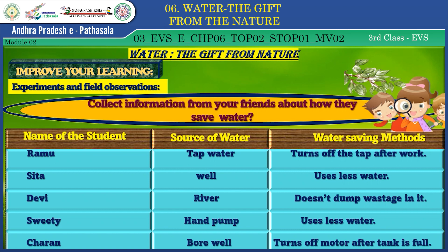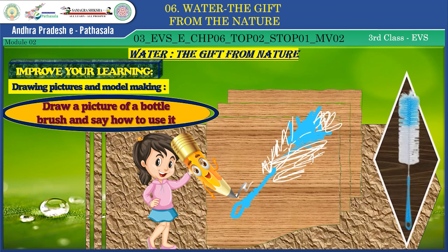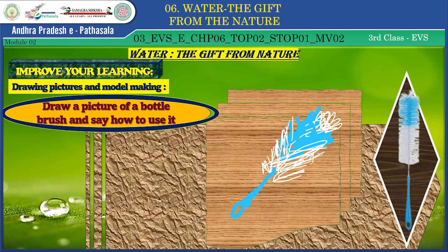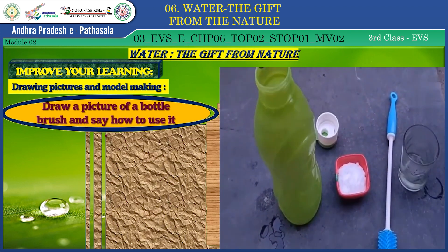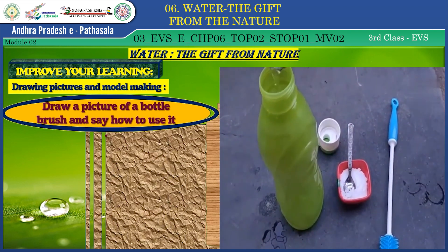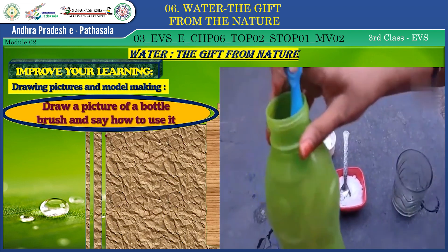Your friends are so good. Dear children, I know there is a good artist in you — I want to test that. My blooming flowers, draw a picture of your bottle brush and say how to use it. Tell me how you use this brush at home. You use it to clean your water bottle — put a pinch of salt, pour warm water and clean with the bottle brush. Clean your bottles regularly in this manner.